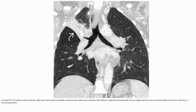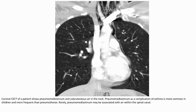Contrast-enhanced CT of a patient shows sublobar right upper lobe atelectasis. Atelectasis in patients with asthma is typically associated with mucous plugging and does not necessarily imply active infection or worsening asthma. Contrast-enhanced CT of another patient shows pneumomediastinum and subcutaneous air in the neck. Pneumomediastinum as a complication of asthma is more common in children and more frequent than pneumothorax; rarely, pneumomediastinum may be associated with air within the spinal canal.